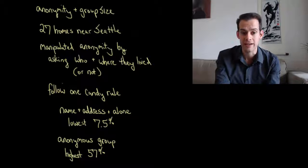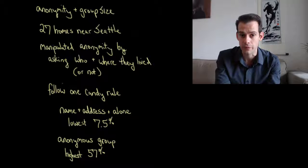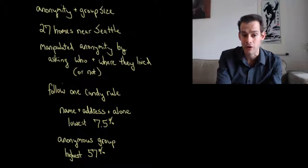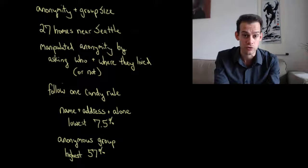And then the researchers surreptitiously observed whether or not the children actually followed this rule or if they violated it. And what they found is that the violations of this one candy rule were lowest when the children were not anonymous. When they were identified, asked their name and where they lived, and were alone, only about 7.5% of the children took more than one candy.